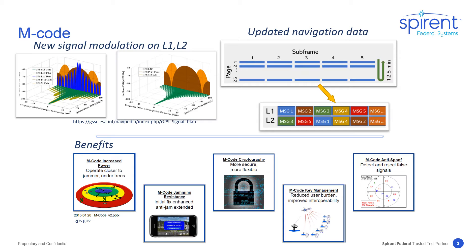An improved key management system simplifies use for authorized users. The security architecture improves the ability of a receiver to detect and reject false spoofing signals. Finally, there is a mandate: new military procurements are required to implement M-code solutions.